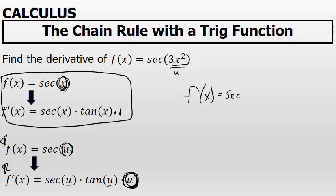In this case, that's the secant of 3x squared times the tangent of 3x squared. But then that's multiplied by the derivative of u, the derivative of 3x squared.